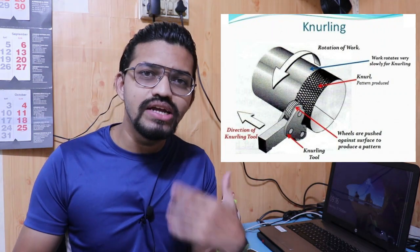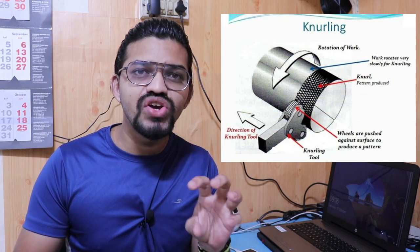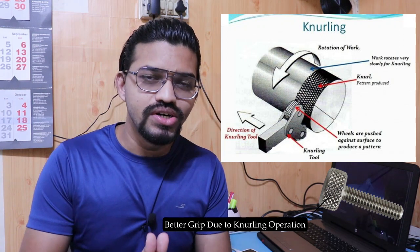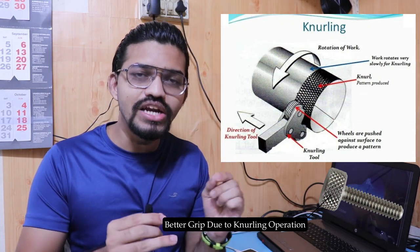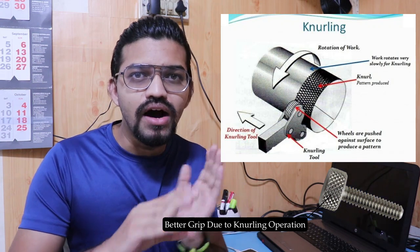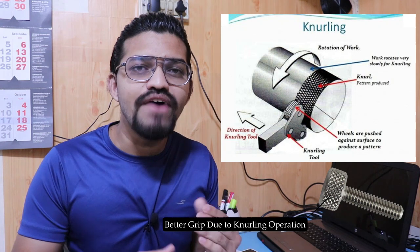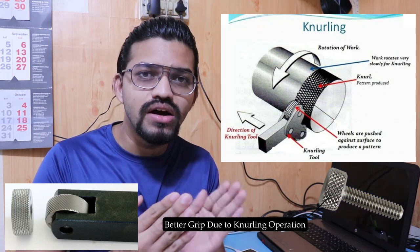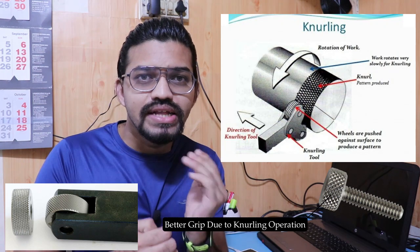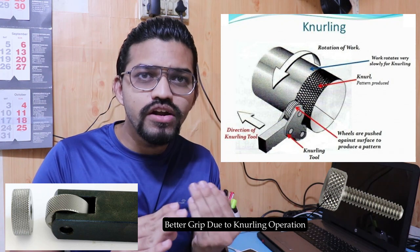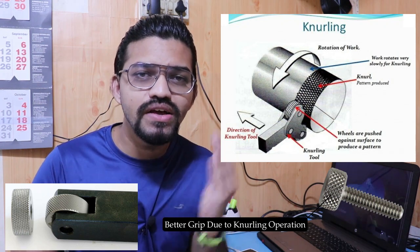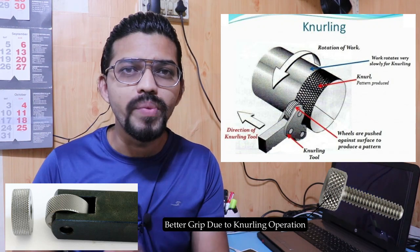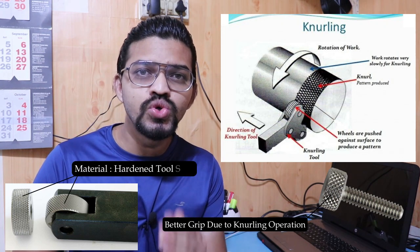The knurling operation is used when a better grip is required on a particular part. The knurling tool — made of hardened tool steel — is pressed against the rotating workpiece. The knurling tool has a specific pattern embossed on it, and that pattern gets replicated on the surface of the workpiece, producing a knurled part suitable for various grip applications.